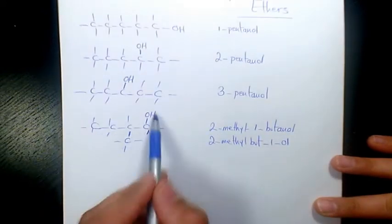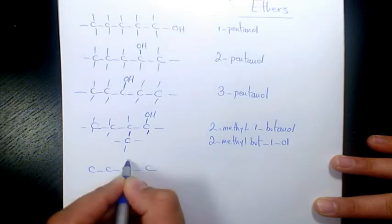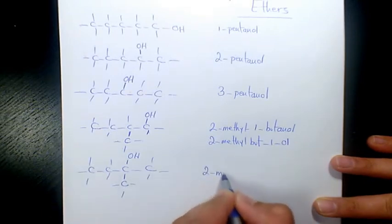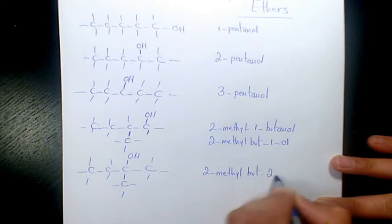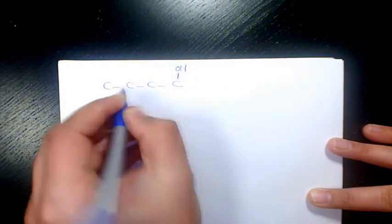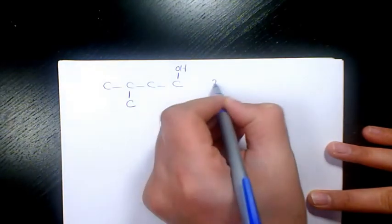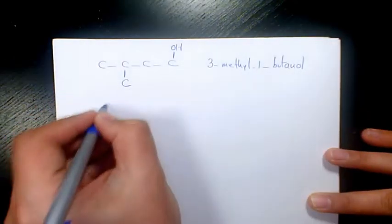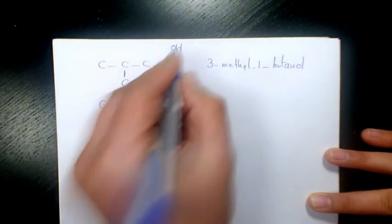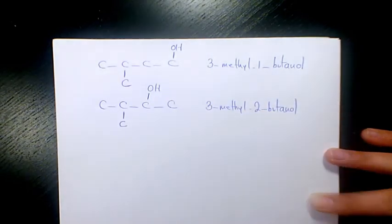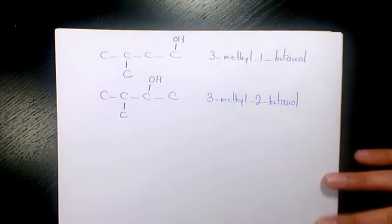Next one is going to be the same thing but the hydroxy group is going to be on the second carbon, and it's going to be 2-methyl-2-butanol. Next one is going to be when we have four carbons and we have OH, but the methyl group instead of being on the second carbon it's going to be on the third one, so we have 3-methyl-1-butanol. And then after that we have another one with the hydroxyl group on the second carbon, so we have 3-methyl-2-butanol. So these are all the alcohols.